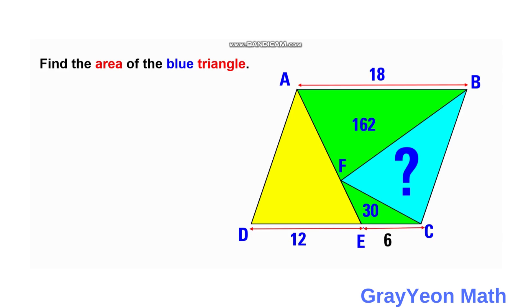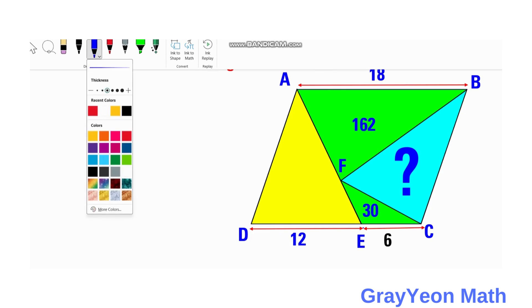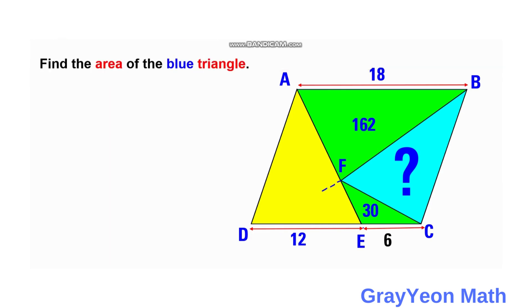Okay, so next we draw a line from point F to D, so we actually form a triangle with the green region and the portion of the yellow.